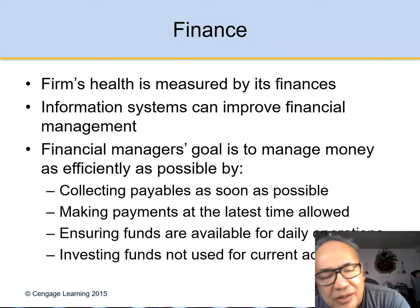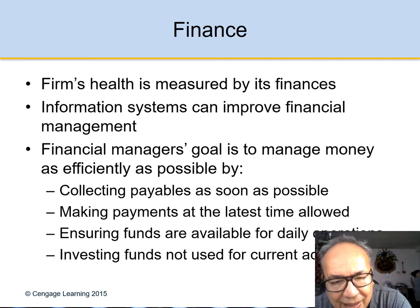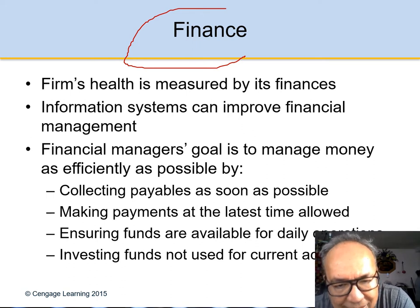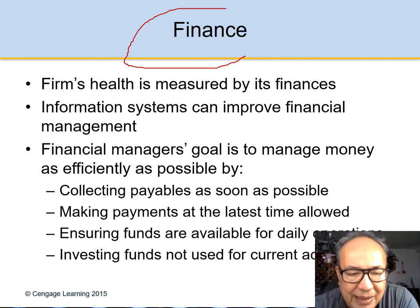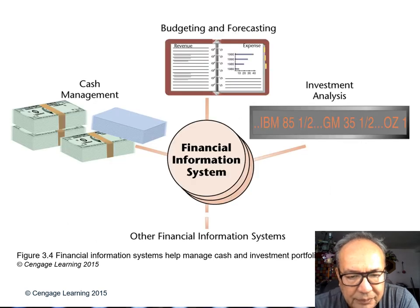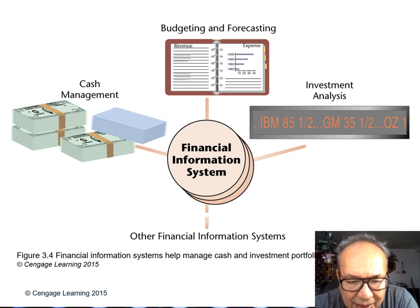Another function is finance. Where do you get the money? Where do you get investors? Where do you borrow money? This is answered by the finance information system — you can improve financial management and collect money from accounts receivable. This is a picture of the financial information system.